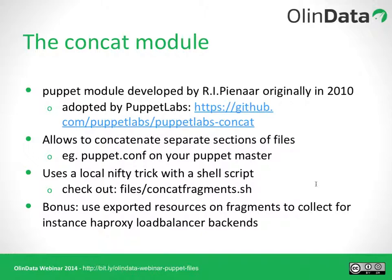Next up is the concat module. This is a module developed by community contributor RAPNAR all the way back in 2010, and later adopted by Puppet Labs. The concat module allows you to take multiple sections of a file and concatenate them together at the end of your Puppet run. A good example is the puppet.conf file on your Puppet Master — it has a main, an agent, and a master section, and the order of those three sections doesn't really matter, it matters which variable is inside which section. The way it works is it deploys a local shell script on each agent and concatenates all the fragments together at the end of the Puppet run. You can look at the concat_fragments.sh script in the Puppet Labs concat module's files directory to see how it works.